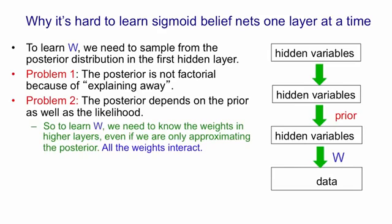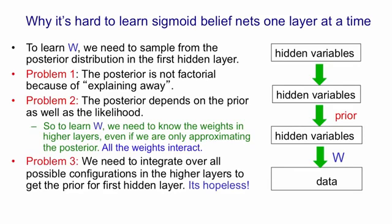Those hidden variables in the layers above create a prior, and that prior will itself cause correlations between the hidden variables in the first layer. To learn W, we need to know the posterior in the first hidden layer, or at least an approximation to it. And even if we're only approximating it, we need to know all of the weights in higher layers in order to compute that prior term. In fact, it's even worse than that, because to compute that prior term, we need to integrate out all the hidden variables in higher layers. That is, we need to consider all possible patterns of activity in these higher layers, and combine them all to compute the prior that the higher layers create for the first hidden layer. Computing that prior is a very complicated thing. So these three problems suggest that it's going to be extremely difficult to learn those weights W. And in particular, we're not going to be able to learn them without doing a lot of work in the higher layers to compute the prior.